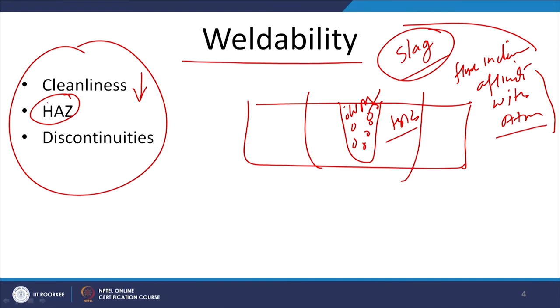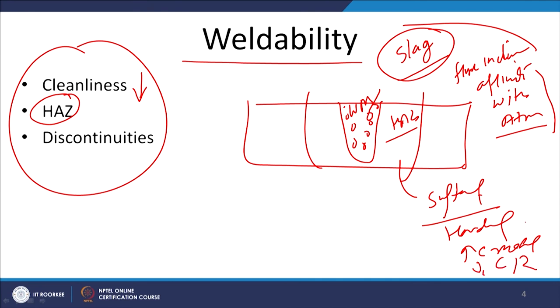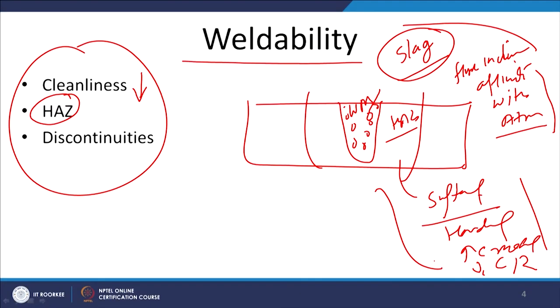Increased amount of slag formation means increased tendency for entrapment in the weld metal, and that in turn will reduce the cleanliness of the weld metal. Metals which have less affinity to atmospheric gases will be cleaner and will pose lesser issues related with weldability. Likewise, the heat affected zone — some metals are not much affected by the heat of welding in the heat affected zone, so they will offer better weldability as compared to metal systems which experience softening or hardening, increased cracking tendency, or reduced corrosion resistance. If the heat affected zone properties are adversely affected, they will have lower weldability as compared to others whose properties are not much adversely affected due to the heat applied during welding.